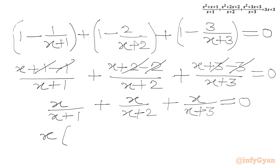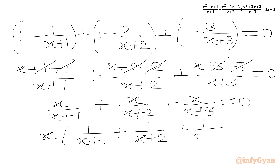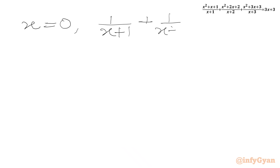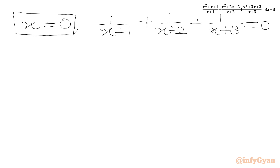We factor out x, giving x times (1 over (x plus 1) plus 1 over (x plus 2) plus 1 over (x plus 3)) equal to 0. So either x equals 0, or 1 over (x plus 1) plus 1 over (x plus 2) plus 1 over (x plus 3) equals 0. From the first factor we get our first real solution x equals 0.